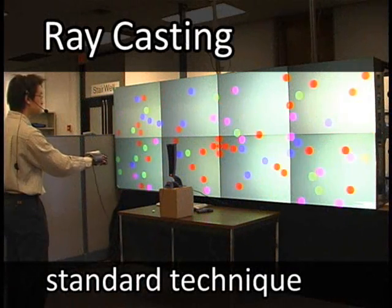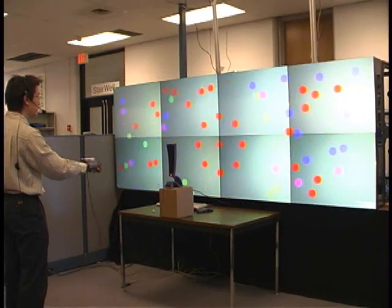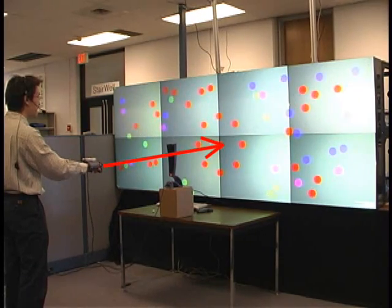On a large digital wall display, freehand selection can be done by casting a ray from your hand onto the display. This can be difficult for small targets as you need to be very precise in your pointing.